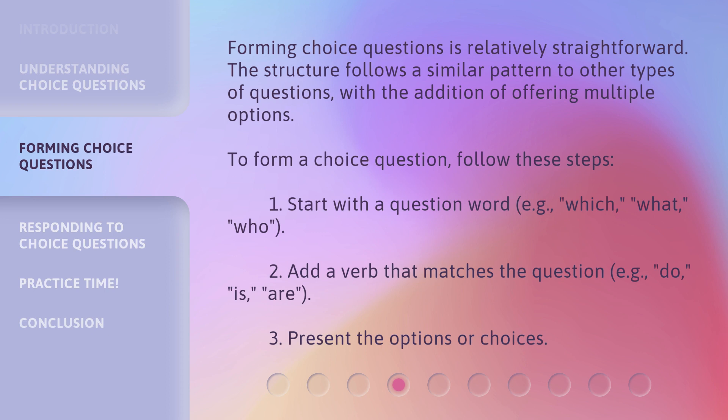Forming choice questions is relatively straightforward. The structure follows a similar pattern to other types of questions, with the addition of offering multiple options. To form a choice question, follow these steps: Start with a question word, e.g., which, what, who. Then add a verb that matches the question, e.g., do, is, are. Finally, present the options or choices.